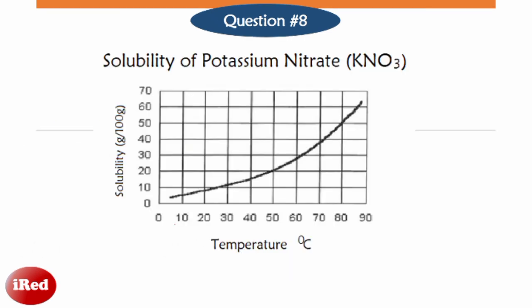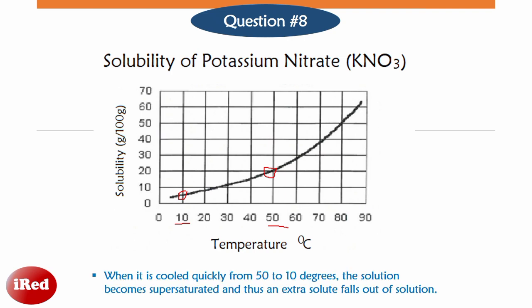Based on the graph, the solution can dissolve a lower amount of potassium nitrate at 10 degrees Celsius than at 50 degrees Celsius. At 10 degrees Celsius, the solution can dissolve only less than 10 grams of potassium nitrate in 100 grams of solution, whereas at 50 degrees Celsius it can dissolve 20 grams. So when cooled quickly from 50 to 10 degrees, the solution becomes supersaturated and extra solute falls out of solution.